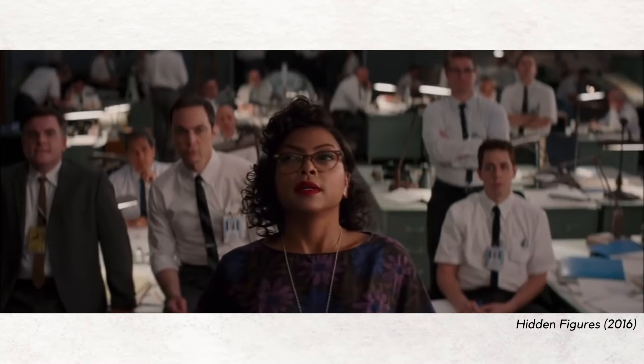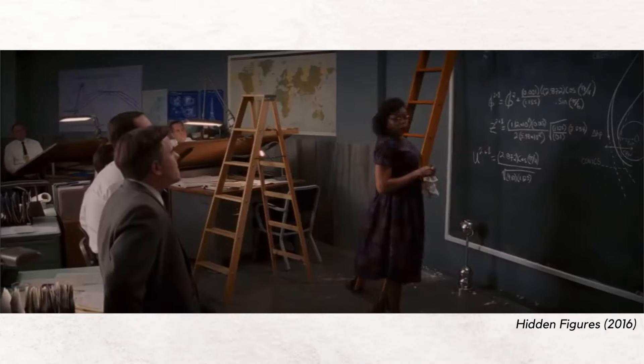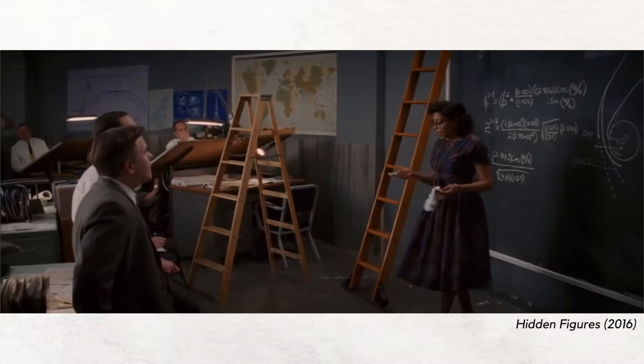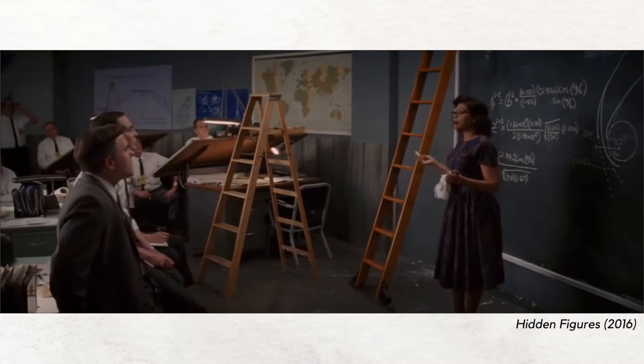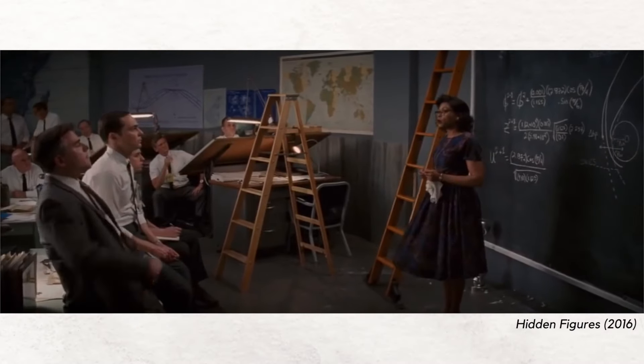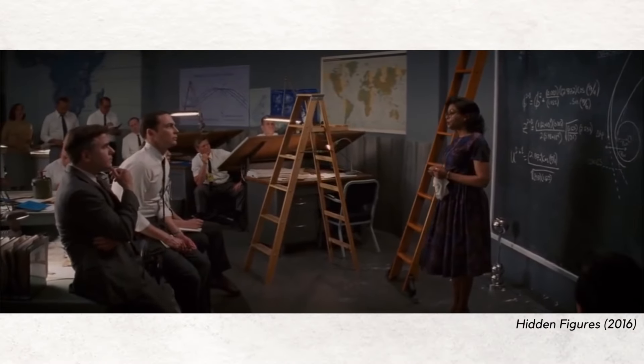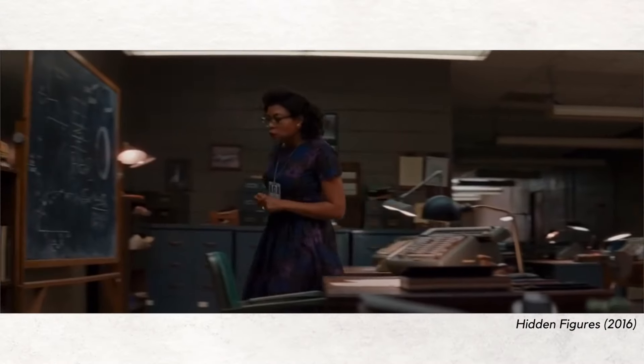In the Hidden Figures movie, there's also a scene where the character who plays Katherine Johnson is talking about Euler's method. She says that they can use Euler's method to solve a problem about going from an elliptical orbit to a parabolic one. She runs off to the side and finds a book that she opens up to learn about the topic.